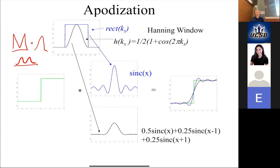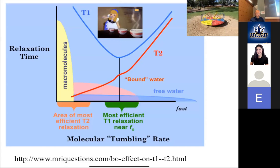The two questions most people stumbled on were the Gibbs ringing and what to do with TR and TE. Most people got the T2 question and the T1 question right. Just remember that as the Larmor frequency moves up with magnetic field strength, you move out of the sweet spot where T1 relaxation is most efficient, into a regime where most particles are oscillating at frequencies far from yours.